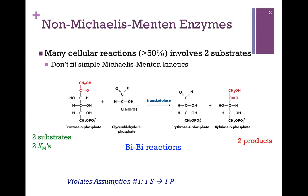In this example, we have the reaction catalyzed by transketolase. It converts fructose 6-phosphate and glyceraldehyde 3-phosphate into erythrose 4-phosphate and xylulose 5-phosphate. Notice that we have two substrates and two products. These are called bi-bi reactions — that is, a bisubstrate-biproduct reaction. This violates our first assumption, which was that we had one substrate and one product, so it doesn't fit the simple Michaelis-Menten model. Since we have two substrates, the enzyme will have an affinity for each one, so we actually have two KMs.